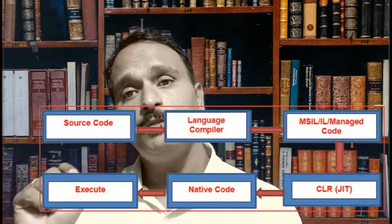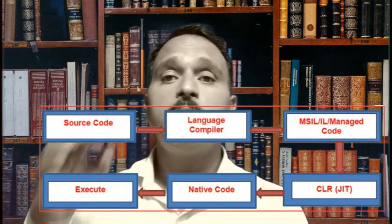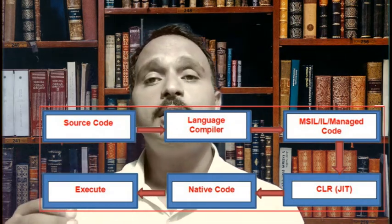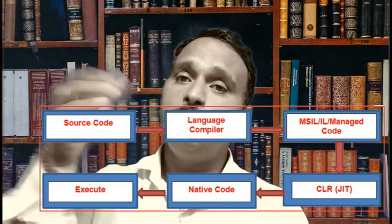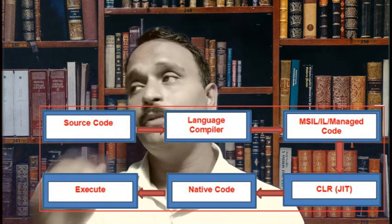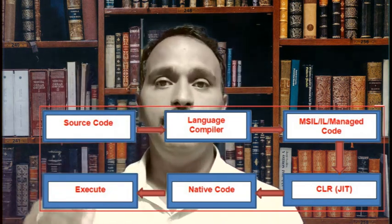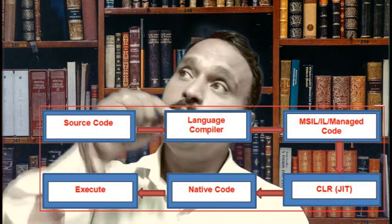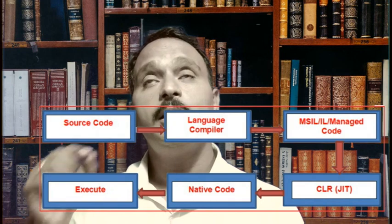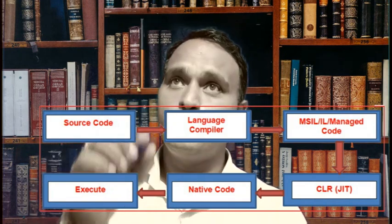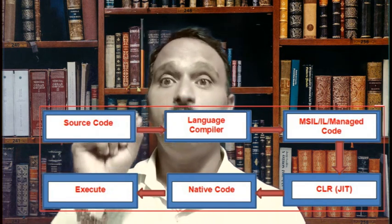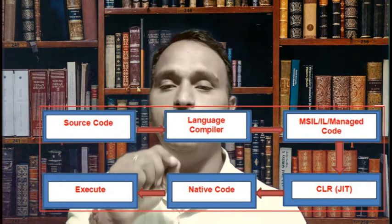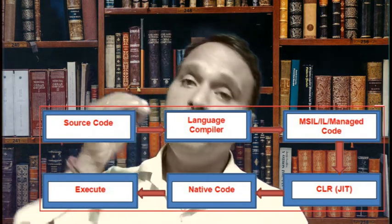In the .NET framework, the code is compiled twice. In the first compilation, the source code is compiled by the respective language compiler and generates intermediate code, which is known as MSIL — Microsoft Intermediate Language — or IL, Intermediate Language Code, or Managed Code.